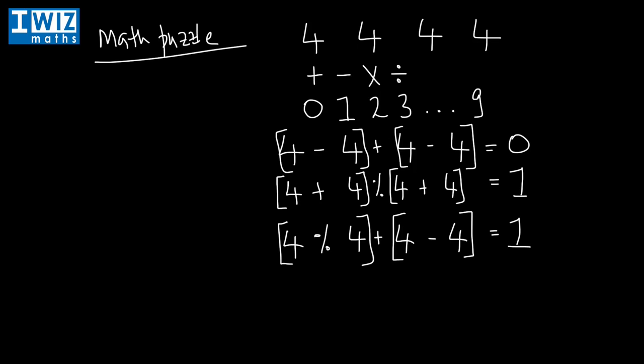So what you're meant to do now is try and get to two, try and get to three, all the way up to nine. That's what you're meant to do now — pause the video and give it a go.